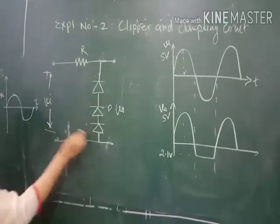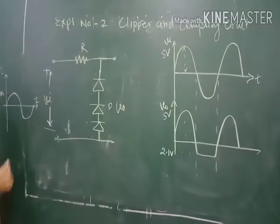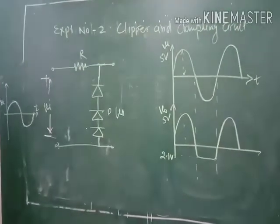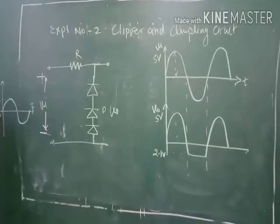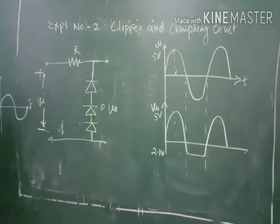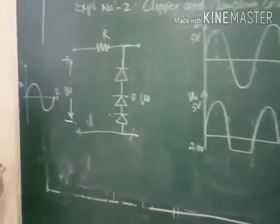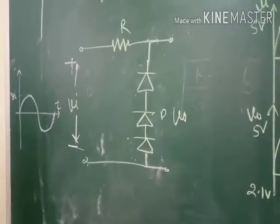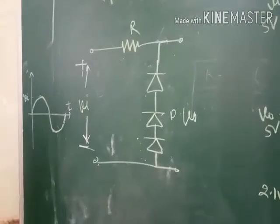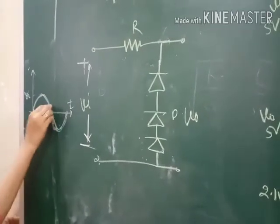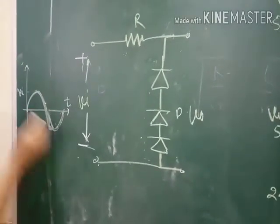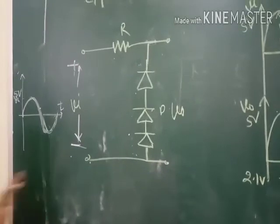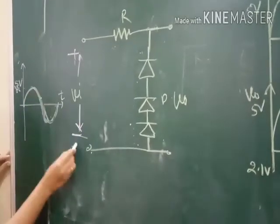Here we are connecting three diodes. The input is applied as a sinusoidal waveform, generated by a function generator. To perform this lab, we need the circuit, the function generator to produce the sinusoidal waveform, and a CRO to observe the waveform. The input waveform having an amplitude of Vm volts is given to the circuit. We will see the operation during two phases: the positive half cycle and the negative half cycle.